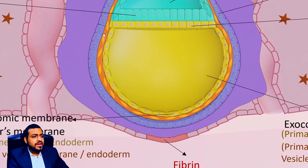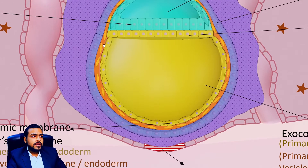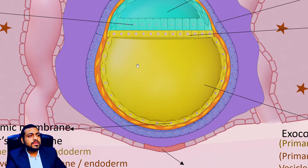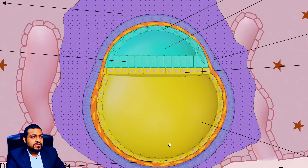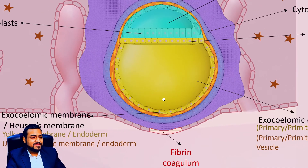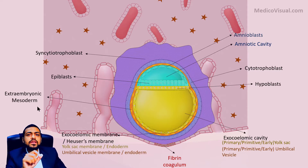Because this layer of cells is present between these two layers — present in the mid of the cytotrophoblast and the hypoblast-derived Heuser's membrane and the amnioblast-derived membrane — this is called mesoderm. It is called mesoderm because it is present in the middle of these two layers.